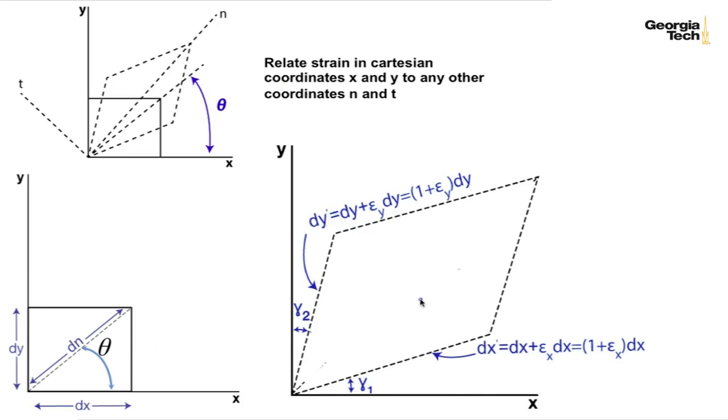We developed these relationships last time. Now I'm going to also look at what happens to this normal direction. So we start off with this dn along this diagonal and we see now that it goes and becomes stretched out longer.